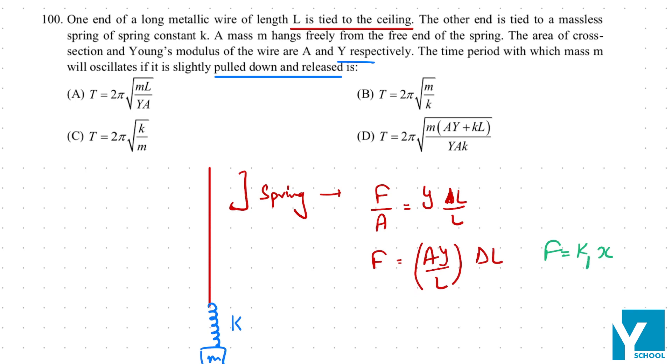Basically, this K1 for the upper body or upper spring is going to be AY/L. If we know the upper body, I will call it K. These two are connected in series.